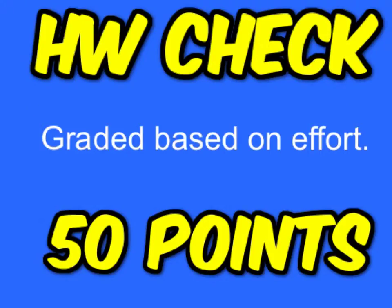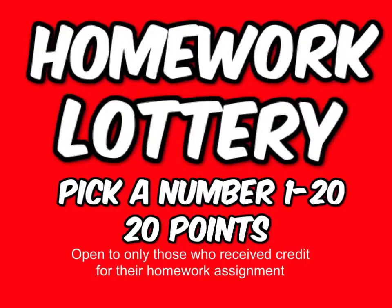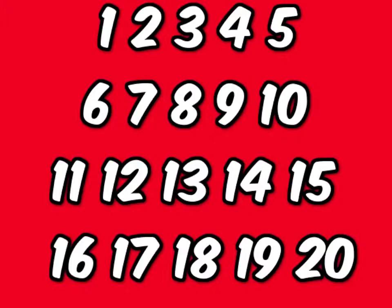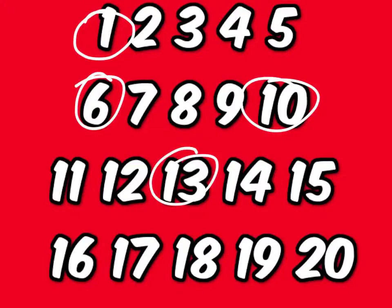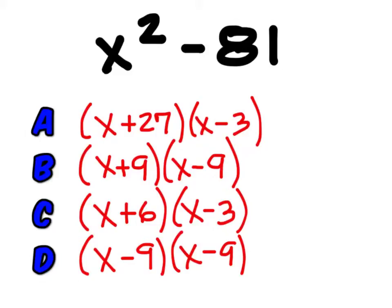I gave you the wrong homework yesterday — it ended up being Algebra 1 that made it to the screen. So if you don't have it today, it's not a big deal. You can do it late, put it in the bucket, and still get your 50 points. We only have seven here today — mostly my fault. Homework lottery: Collins and Allen, pick a number from one to twenty. Winning numbers are one, six, ten, thirteen, and twenty.